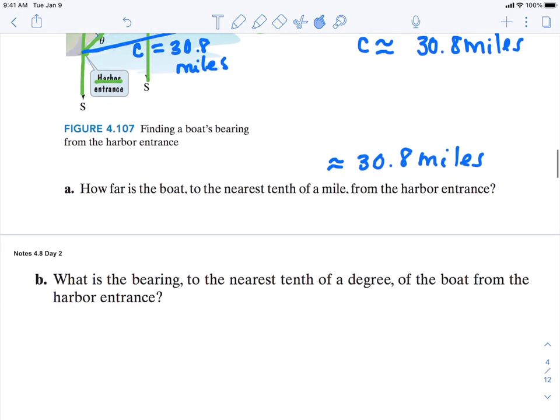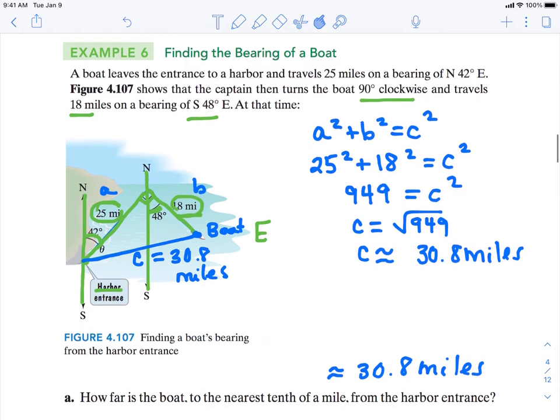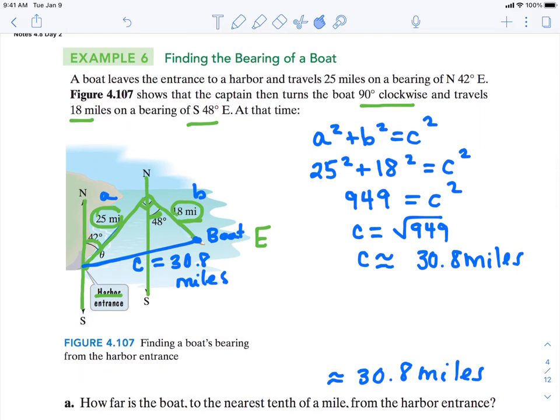Part B says, what is the bearing of the boat from the harbor to the nearest tenth of a degree? So the bearing of the boat from the harbor means that the bearing from the harbor to the entrance. So we're going to look at that north-south line.